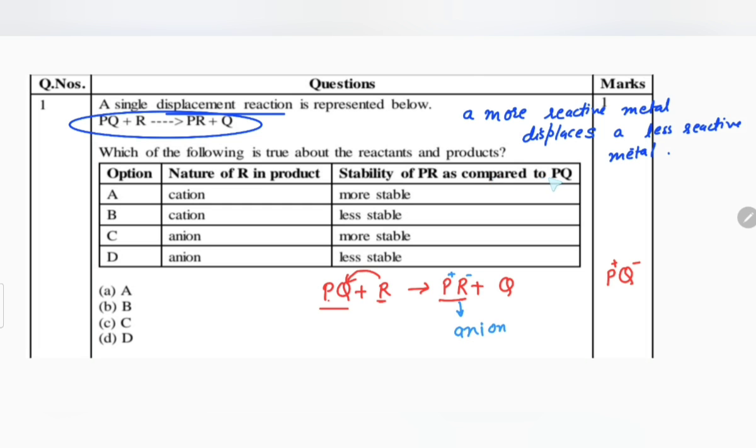You see here the options: nature of R in product and stability of PR as compared to PQ is given. Option A says R is a cation, no, R is anion, so option A is wrong. Option B also says it is a cation, this is again wrong. Now two options are left, C and D, both have anion.